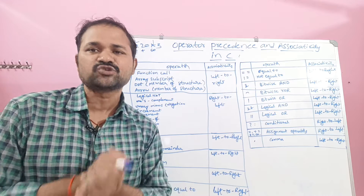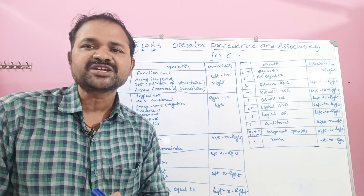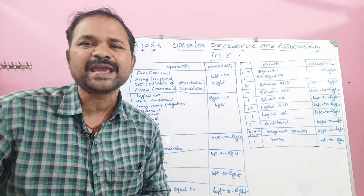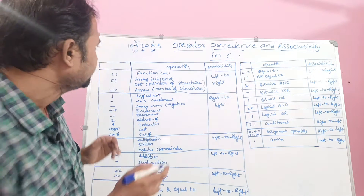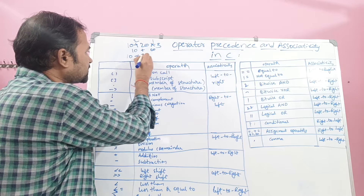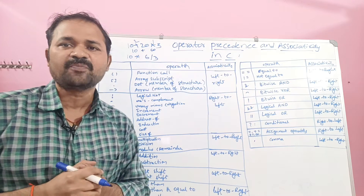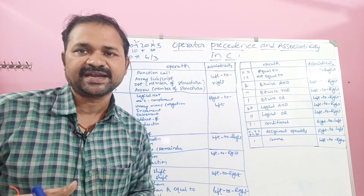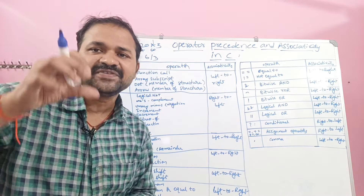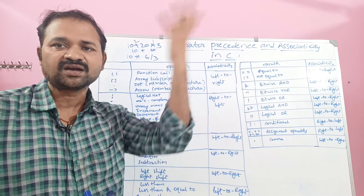Now let us see what is associativity. Associativity is mainly useful if an expression contains two or more operators of the same priority. For example, consider 10 star 6 by 3. Here star and the division operator have equal priority. So which operator we have to execute first must be decided based upon the associativity.